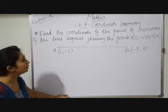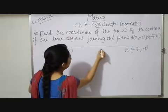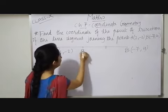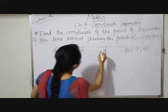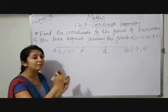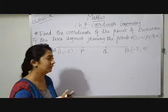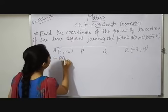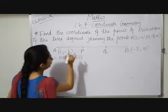Dividing into three equal parts, this one be my first part, second and third. Here let this one be P, this one be Q. Now trisection written means dividing into three equal parts. So here AP is equals to PQ is equals to QB.